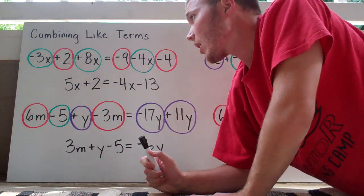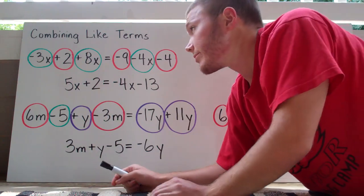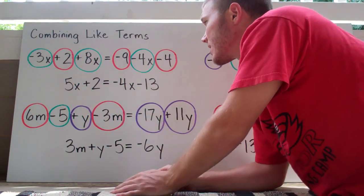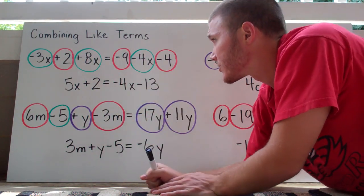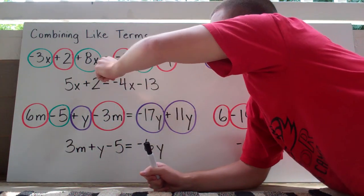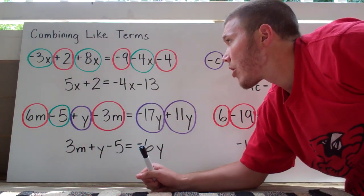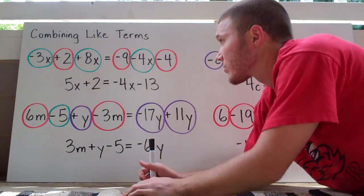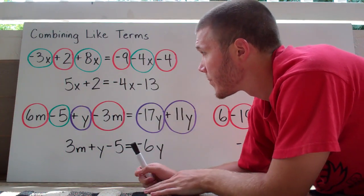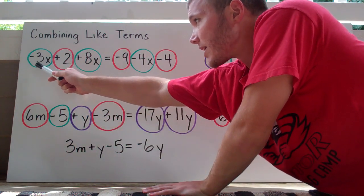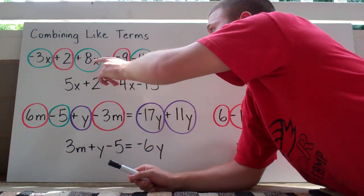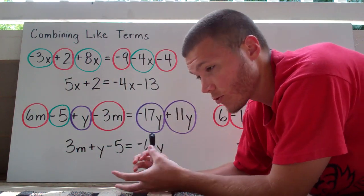For example, let's say I have the equation: negative 3x plus 2 plus 8x equals negative 9 minus 4x minus 4. All the integers — negative 4, negative 9, and positive 2 — those are all like terms because those are just integers. The ones circled in green — negative 3x, positive 8x, and negative 4x — those all share the same variable x, so those are like terms.